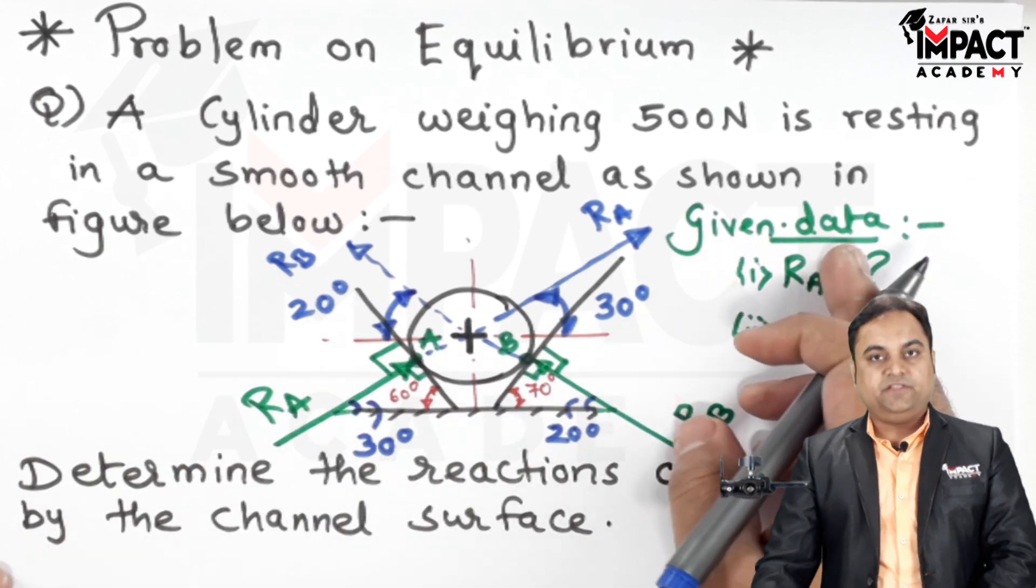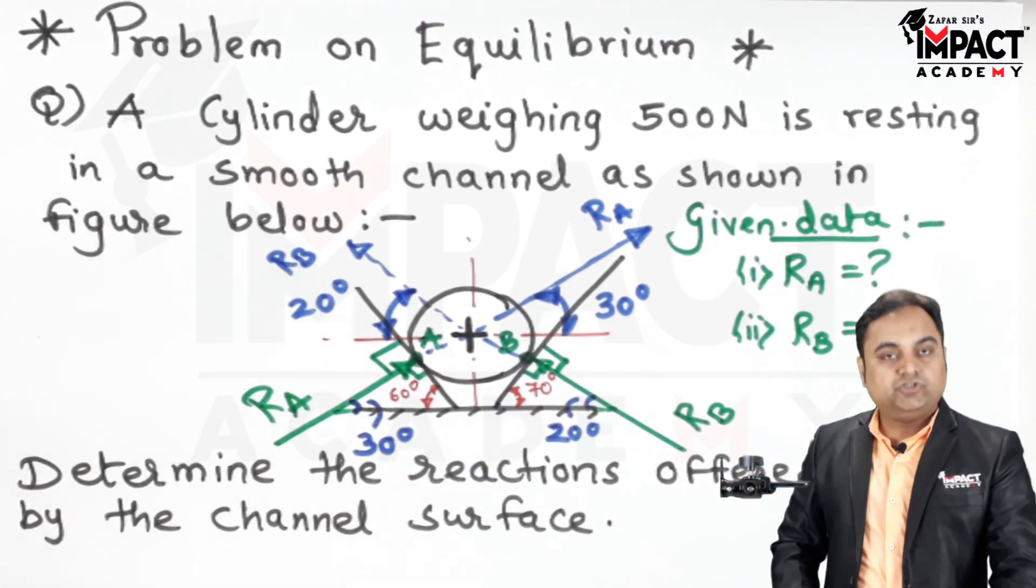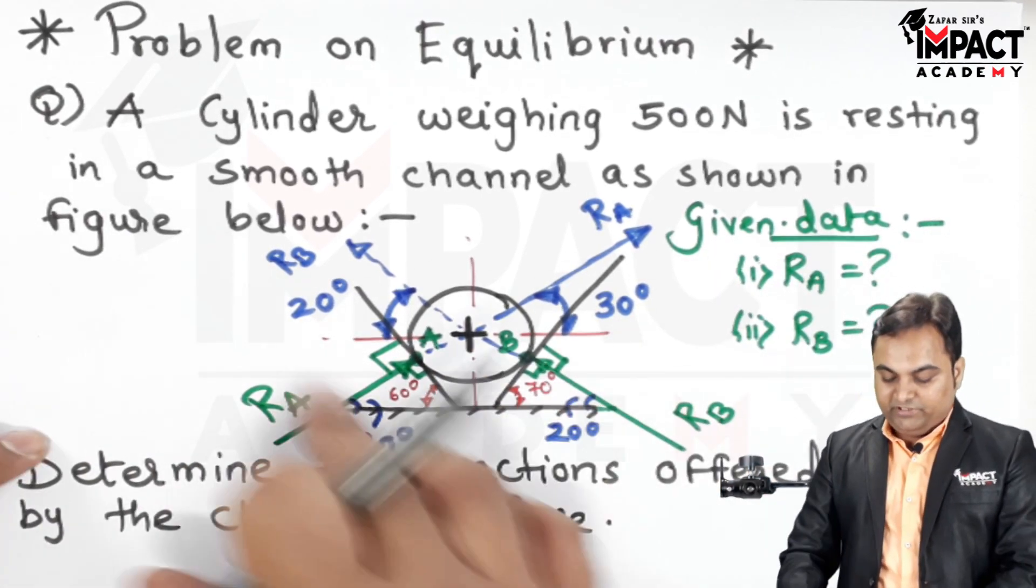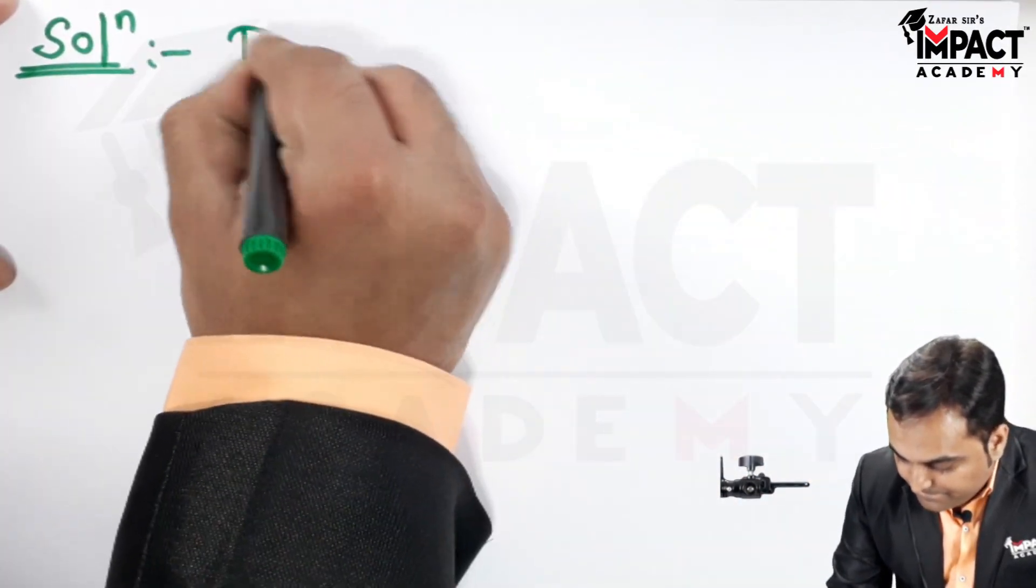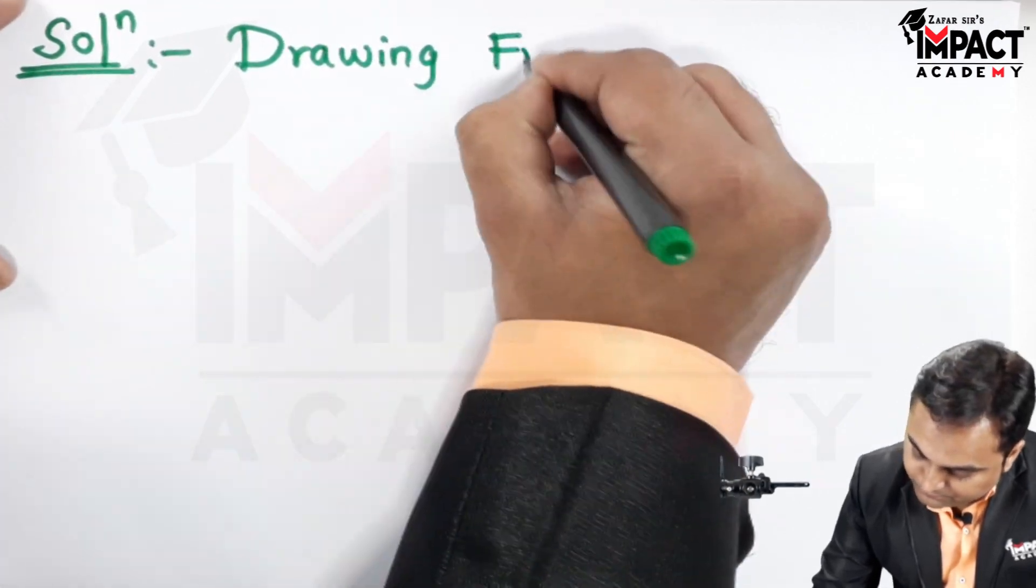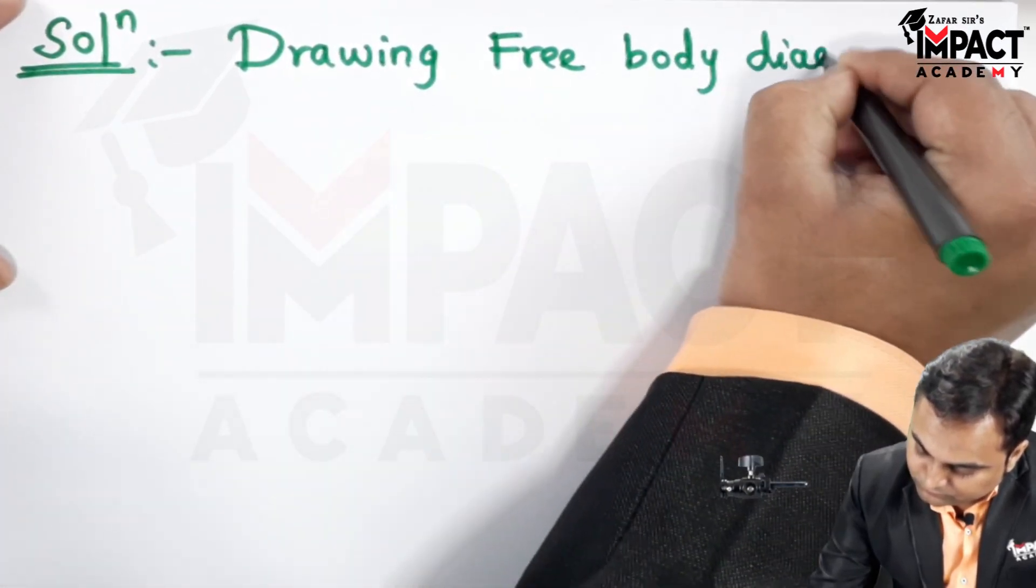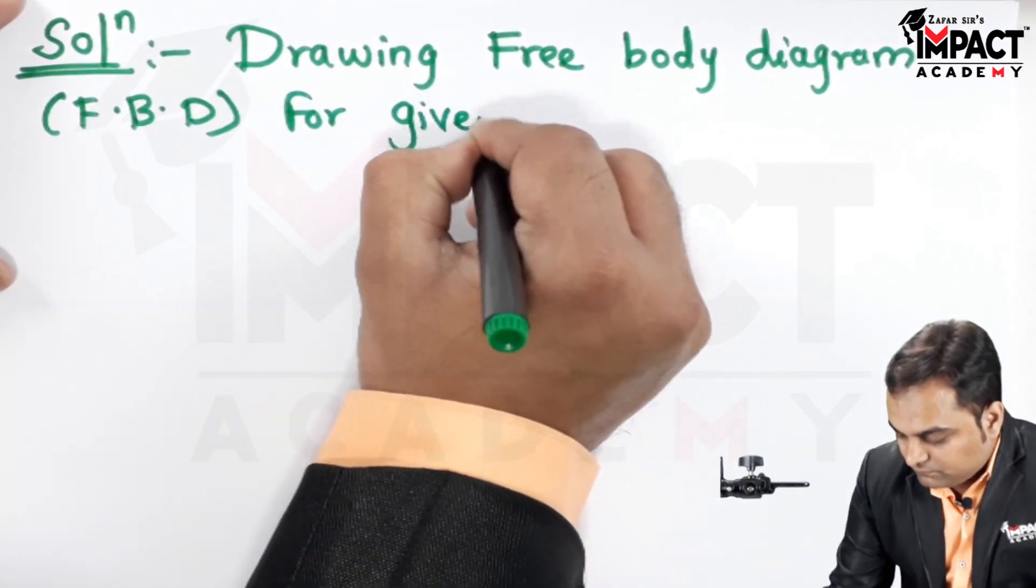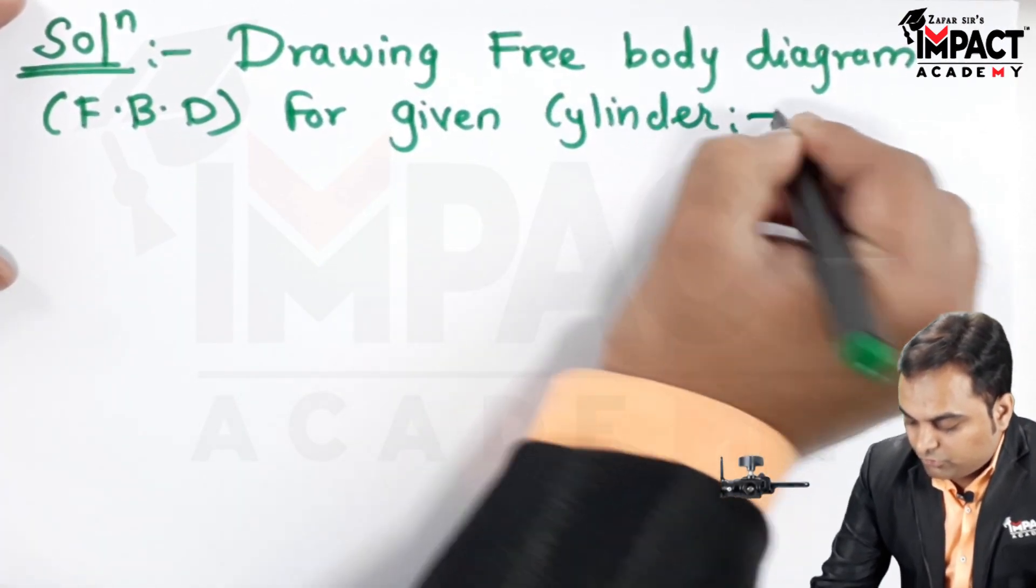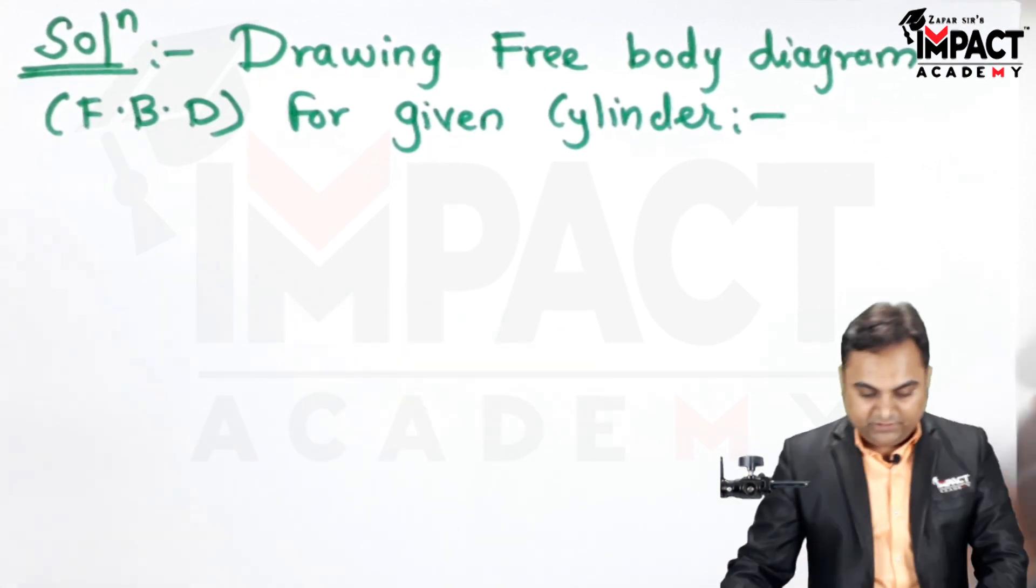So in this way the forces are transferred. Now in the solution part first I would be drawing the FBD, that is the free body diagram, for the given cylinder.